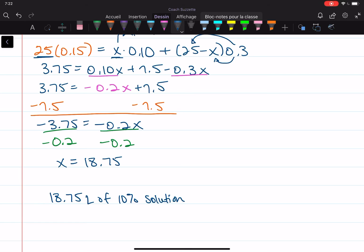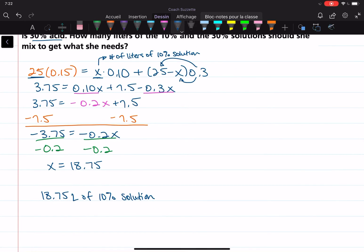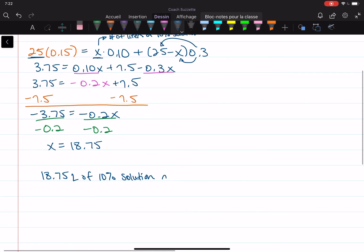So then how much should she use of the 30% solution? Well, that was 25 minus X. So 25 minus 18.75 is 6.25. 6.25 liters of the 30% solution.